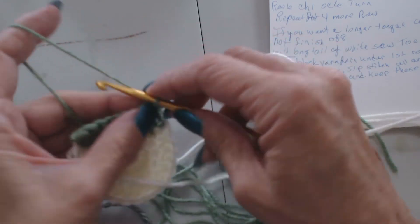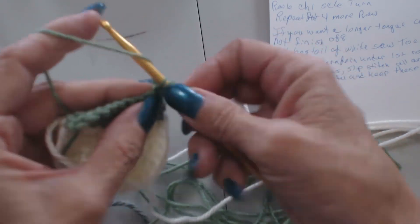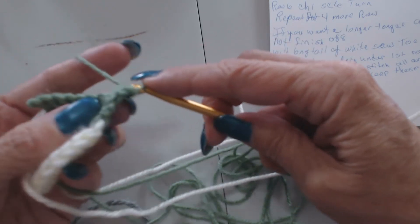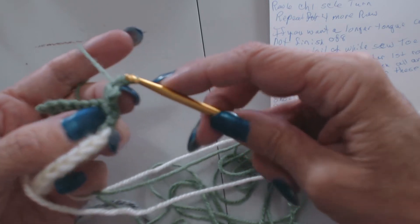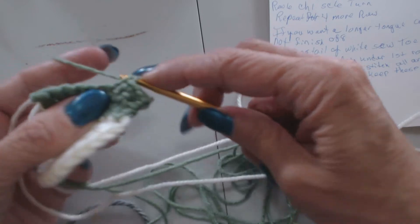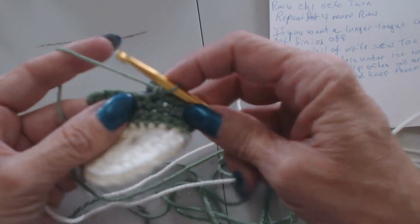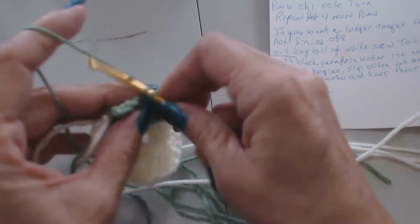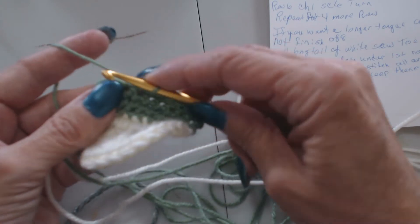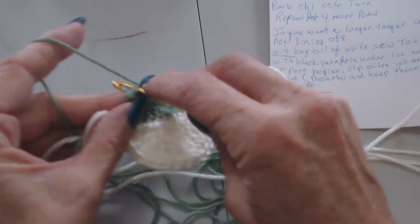Turn and we'll do one more row. So this will be row four. And like I said, it all depends upon how you crochet. If you crochet loose, if you crochet tight. And what size your thread is. The size of your thread also makes a big difference.